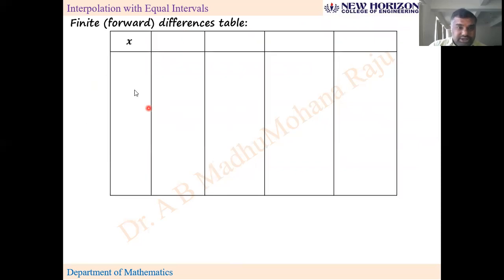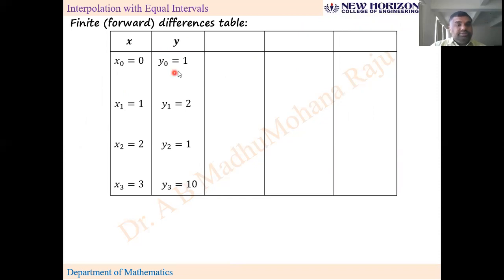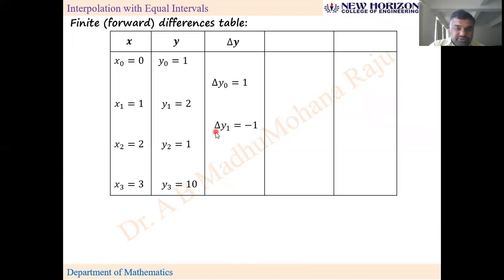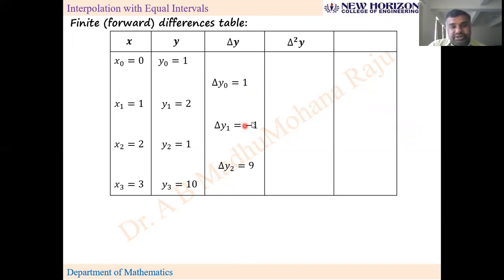Forward difference table: x values are denoted x₀, x₁, x₂, x₃ and y values y₀, y₁, y₂, y₃. First order differences: Δy₀ = 2 − 1 = 1, Δy₁ = y₂ − y₁, Δy₂ = y₃ − y₂ (each is down value minus upper value). Second order differences are calculated from first order differences (down minus upper). Third order differences similarly: for example, 10 − (−2) = 12.